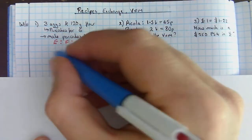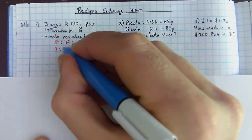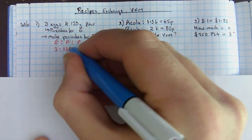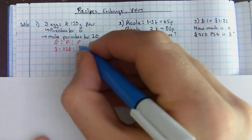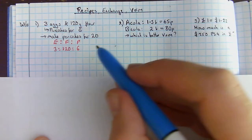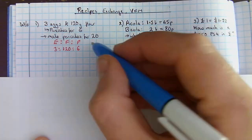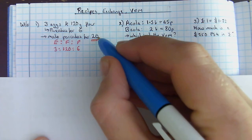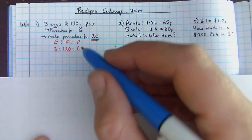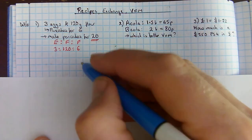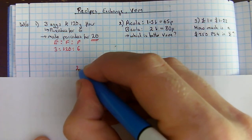So three eggs, 120 grams of flour gives me pancakes for six. I'm trying to make pancakes for 20 people. So I need to make sure that 20 lines up in the right place. People is my third item, so people is going to go down here, 20.